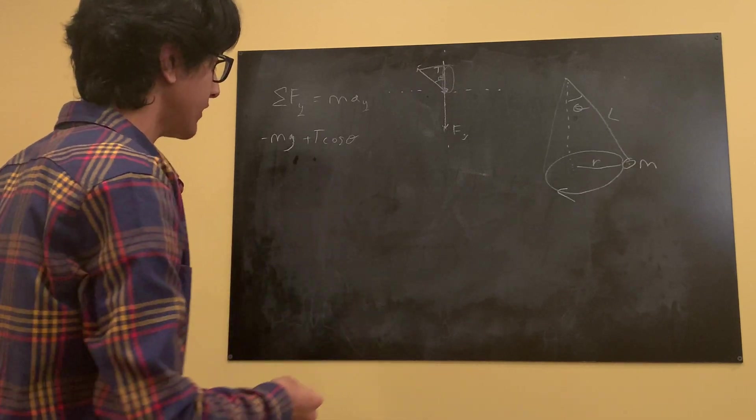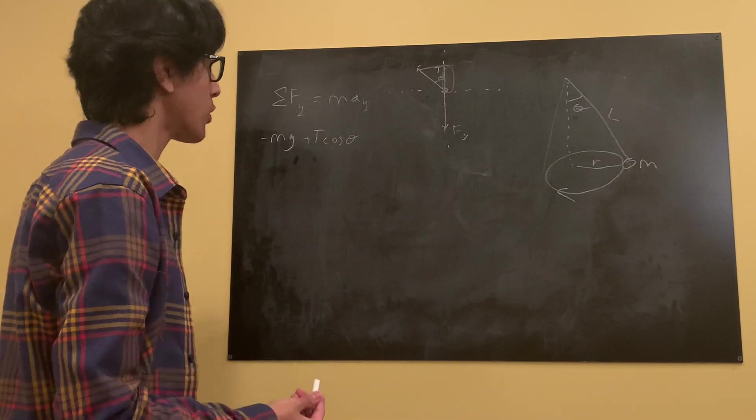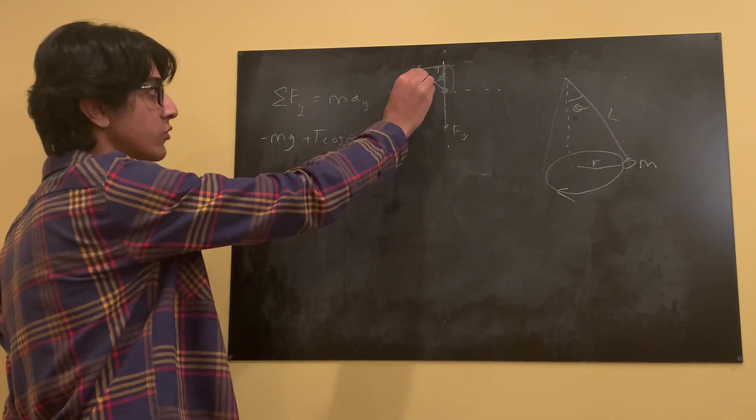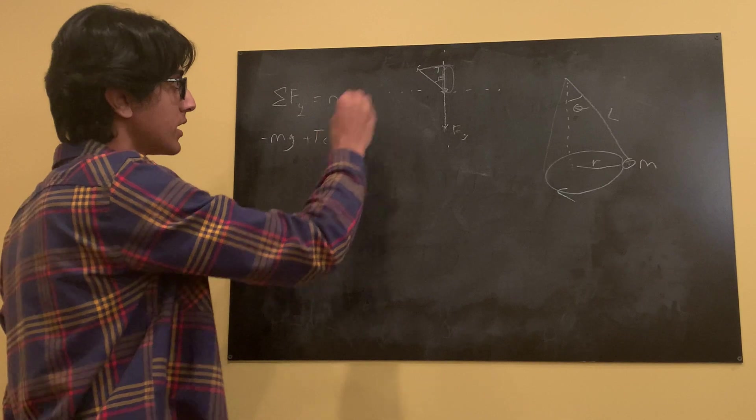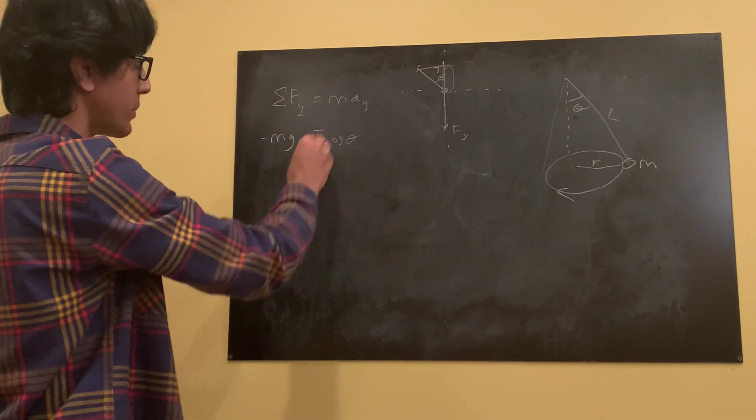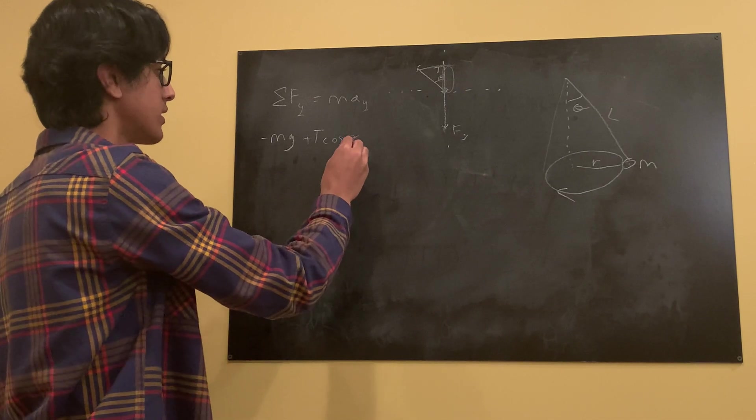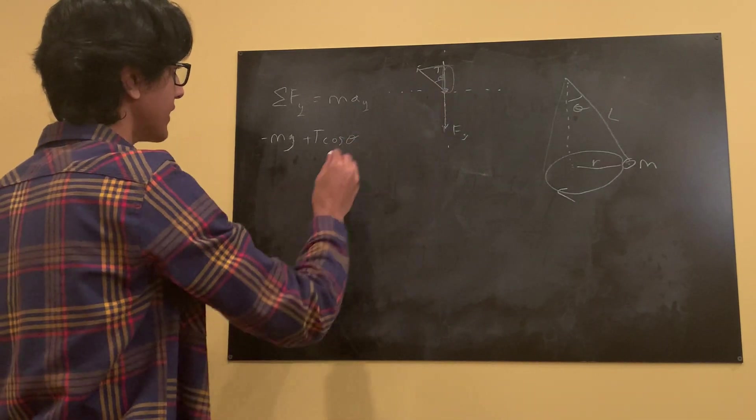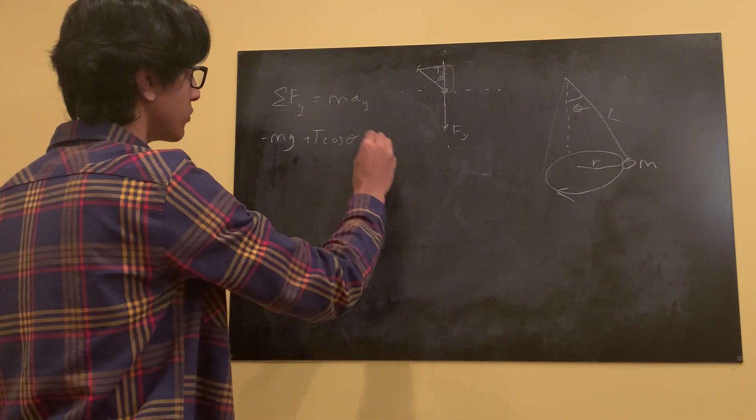Since cosine is adjacent over hypotenuse, so adjacent would be this. Hypotenuse would be t. We multiply that t over and then we will get that adjacent. So this represents adjacent to that angle right there. So that's equal to m a y. What is our acceleration in the y direction? Let's look at this object right here.